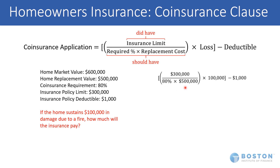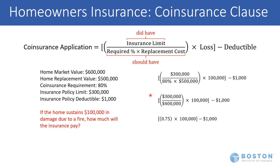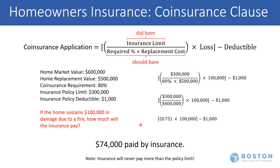So we just start dropping in the numbers. There's our 'did have' number of $300,000; there's our required 80% of a $500,000 replacement value. That's multiplied by the loss, and then the deductible is subtracted. So we have $300,000 over $400,000. Right there we see this is not properly insured for the coinsurance clause — it's too short. We have $300,000 but we need $400,000, multiplied then by the loss, and the deductible is subtracted out. So we have 75% of $100,000 minus $1,000.